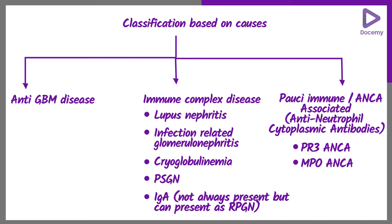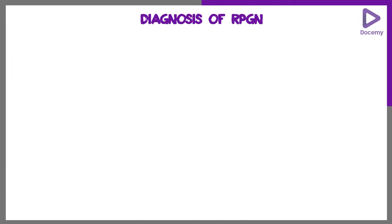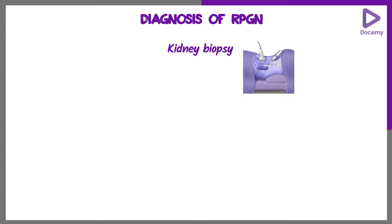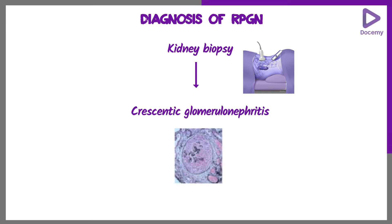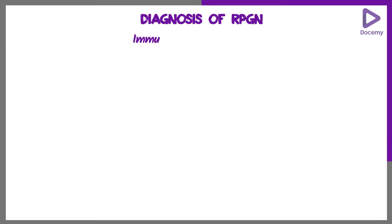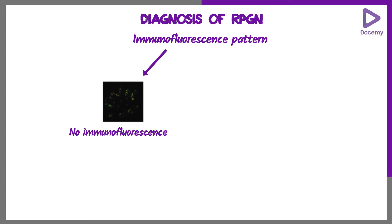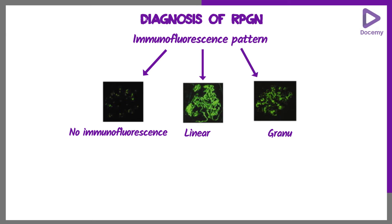If you clinically diagnose an RPGN, do a kidney biopsy. In the kidney biopsy you will get crescentic glomerulonephritis. You will then do immunofluorescence. On immunofluorescence, you can have a linear pattern or a granular pattern.